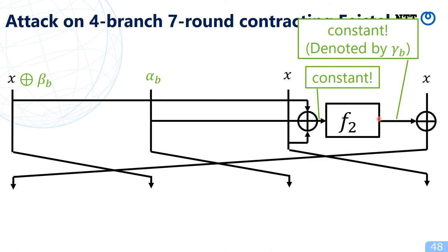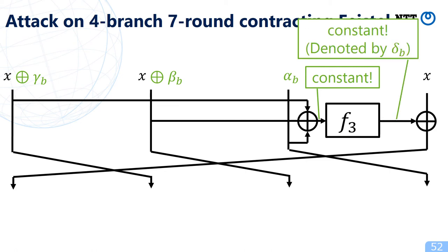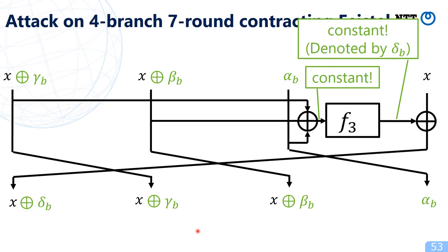In the second round, again the input to the round function becomes a constant because the x terms cancel, so the output of f_2 is again a constant γ_b depending on secret values. After the second round the state becomes (x ⊕ constant, x ⊕ constant, x ⊕ constant, α_b, constant, x). Similarly, in the third round, the input to f_3 is constant, and the output δ_b is again a constant depending on secret values.